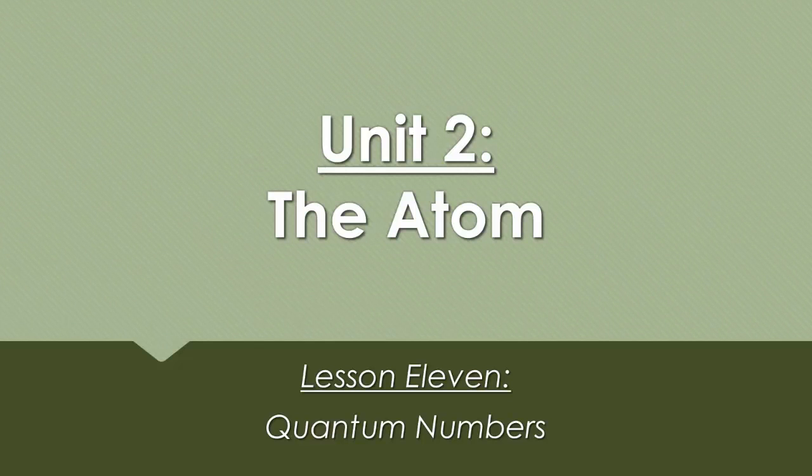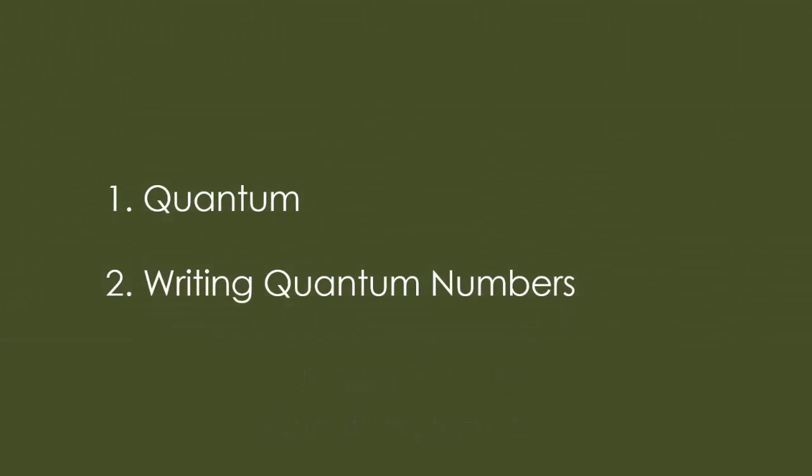Lesson 11 is on quantum numbers. We're going to discuss what quantum is and how to write these numbers out. Louis de Broglie in 1924 came up with the idea that electrons move with wave-like properties. Instead of traveling around the nucleus in a straight line, they fluctuate up and down as they circulate around an object.